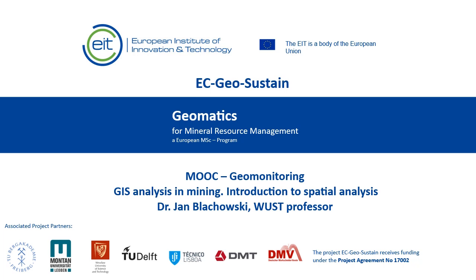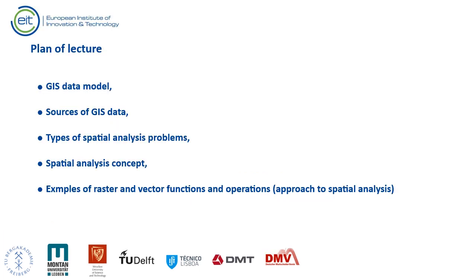In this lecture we will introduce the underlying and basic concepts behind geographic information systems and spatial analysis. We will start with the GIS data model and common sources of data. Next we will talk about the types of spatial problems that can be solved in GIS and the main steps of spatial analysis. Finally, we introduce the basic concepts behind vector and raster map overlay functions.